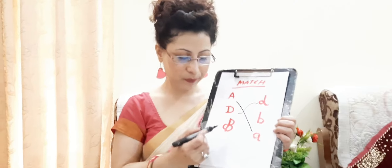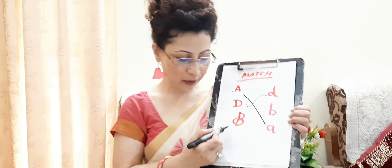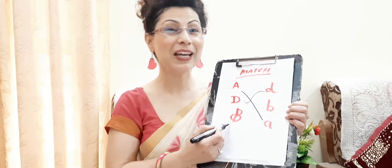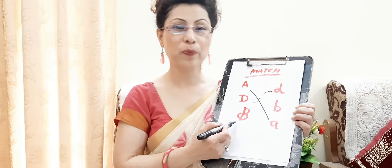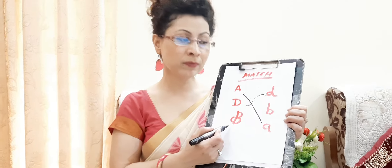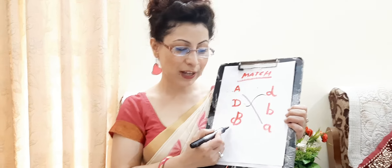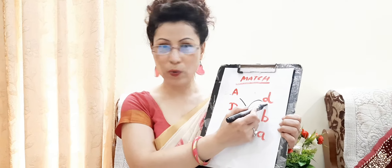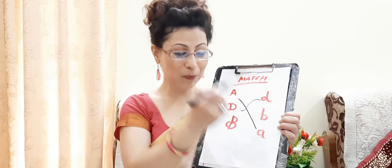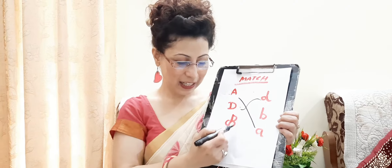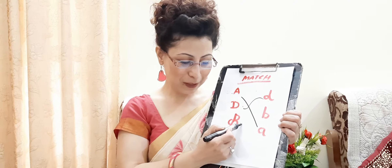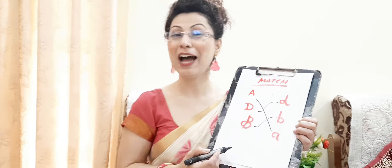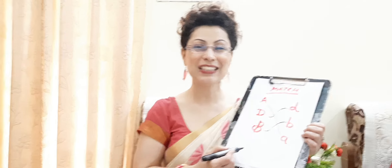Now what is the next alphabet? Capital B. So where is small b? Is this small b? No. Is this small b? Yes. Capital B, small b — we have to match.